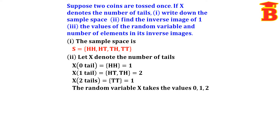In the second question, we have to find the inverse image of 1. The outcomes with exactly one tail are HT and TH — this set is called the inverse image. So the inverse image of 1 is {HT, TH}.